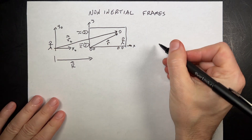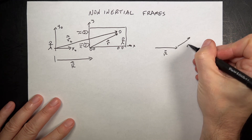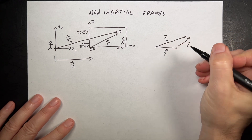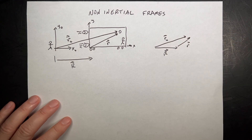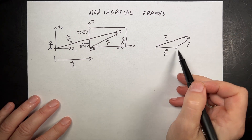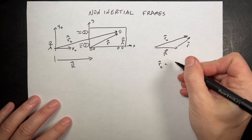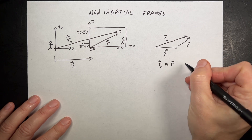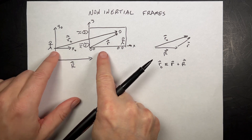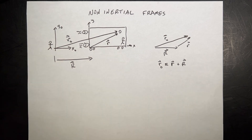If I have these three vectors — R, R (capital R), and R0 — this is a vector addition problem such that R0 is equal to R plus capital R. So if I know the position of the moving frame, I can find the relationship between how both observers measure the ball's position. But this is moving, and capital R is not constant.